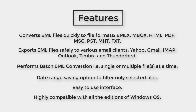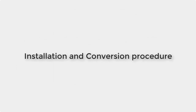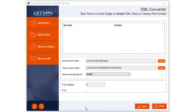Arison EML Converter software is designed with an easy and user-friendly interface so that it can be used by all types of users, irrespective of their technical knowledge. It is compatible with all versions of Windows, including the latest Windows 10 and other previous editions. Now let's learn how to proceed with this software for EML conversion — first, download and launch the software on your system.